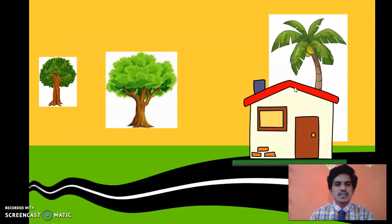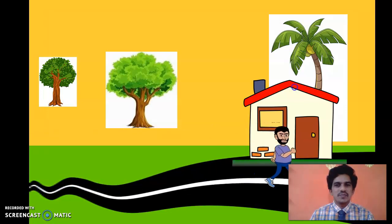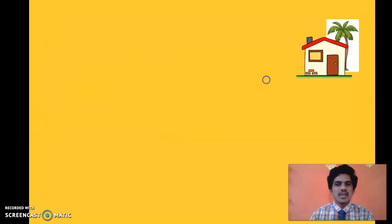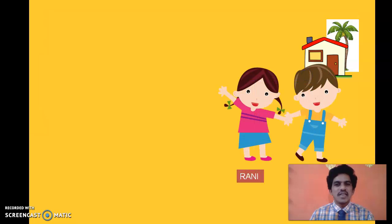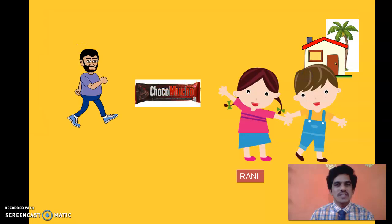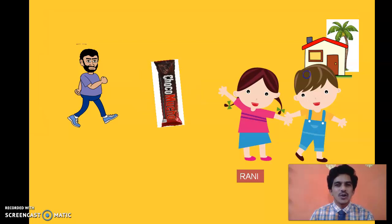Let us take a case where Mr. Kiran is coming back to his home after work. He has two children, namely Ravi and Rani, and these two children are very eagerly waiting for their father to arrive because he has promised that he would bring a nice chocolate.